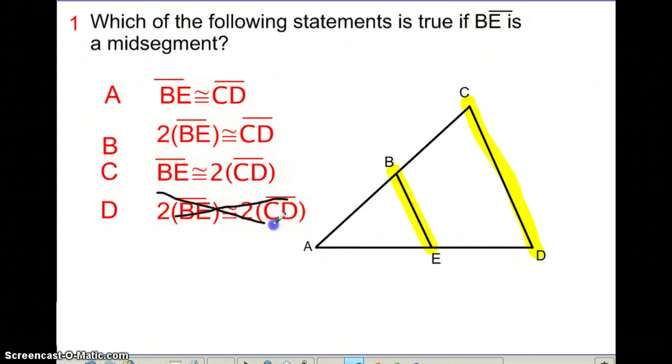We can eliminate statement D because this really is simply saying that BE is equal to CD. That also means we can eliminate A. So it leaves us down to B and C. If BE is half as long as CD, another way of saying that is if I multiply the length of BE times two, I will get the length of CD. Therefore, two times BE will end up equaling the length of CD. The correct solution for this should be letter B: 2(BE) is congruent to CD. An alternate form of this could be BE is congruent to one-half of CD.